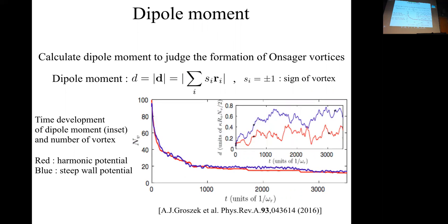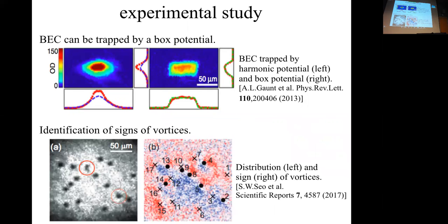This graph shows the time development of the dipole moment and the number of vortices. The red line shows the result for the harmonic potential and the blue line shows the result for the steep wall potential. The dipole moment for the steep wall potential develops enough and is larger than that of the harmonic potential. So the dipole moment can be used to characterize the formation of the Onsager vortex.